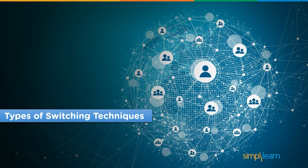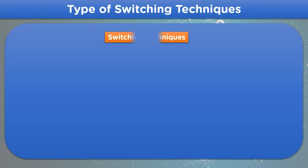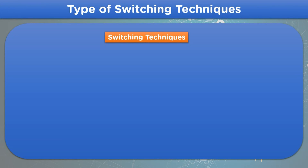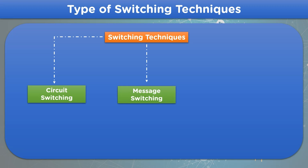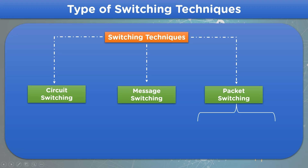Next, we will look into different types of switching techniques. Switching techniques can be divided into three primary types. The first is circuit switching, which requires a predestined path for data transmission. Then we have message switching, which integrates the destination address with the data for transmission. And finally, we have packet switching, which divides the message into smaller units known as packets. Packet switching can further be divided into two types: virtual switching and datagram switching.